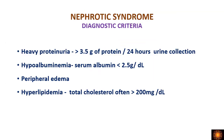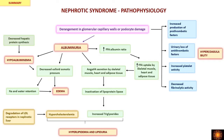The diagnostic criteria for nephrotic syndrome require heavy proteinuria of more than 3.5 grams of protein per 24 hours, hypoalbuminemia with serum albumin less than 2.5 grams per deciliter, generalized edema, and hyperlipidemia with total cholesterol often more than 200 milligrams per deciliter. All four criteria must be present to diagnose nephrotic syndrome.